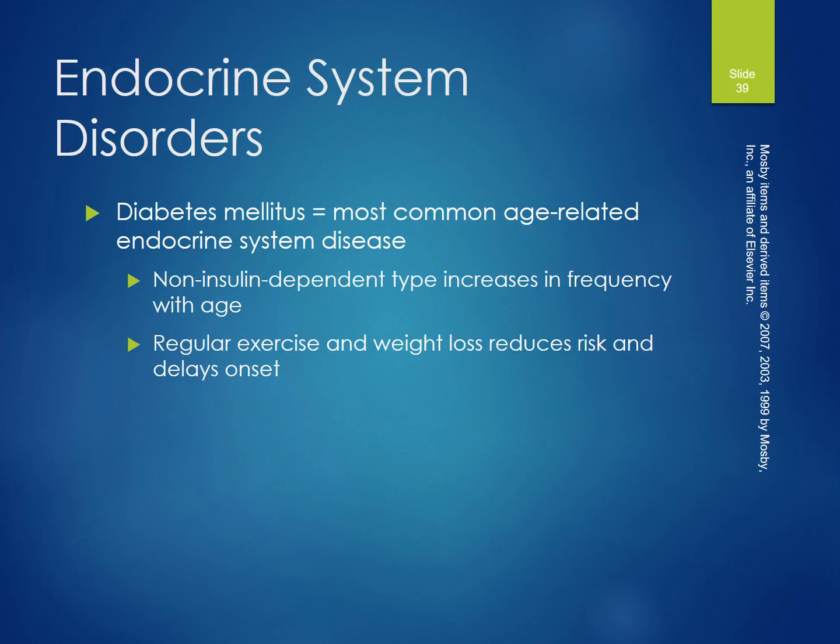Endocrine system disorders: diabetes is the most common age-related endocrine system disease. Non-insulin-dependent type 2 diabetes increases in frequency with age. Regular exercise and weight loss reduce risk and delay onset.